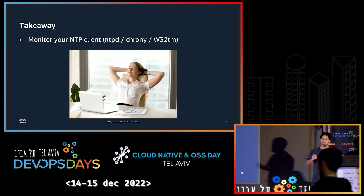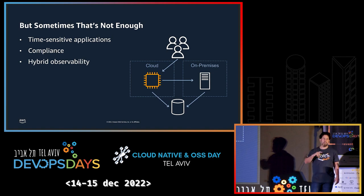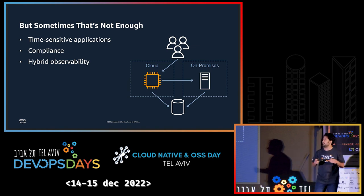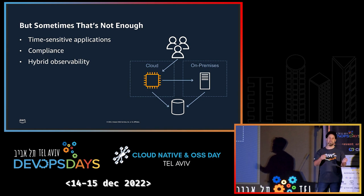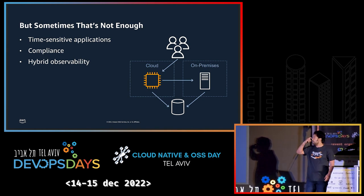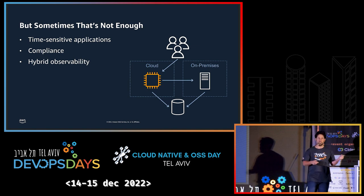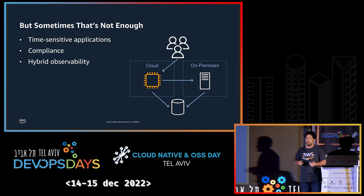For a very long time I thought that was enough, until two years ago when I joined AWS and started seeing more customers with more use cases. For some of them, this is not enough. Some customers have time-sensitive applications — for example, they take a timestamp of a financial transaction and need to compare it with a third party. Some customers have compliance and regulation needs and must be within a certain number of milliseconds or even microseconds from UTC.